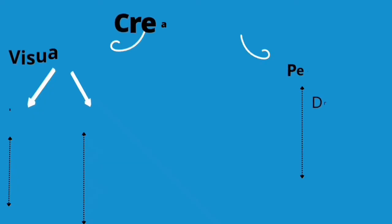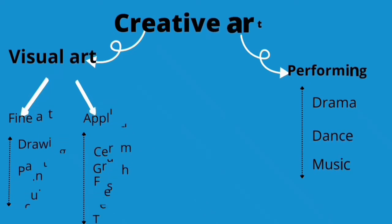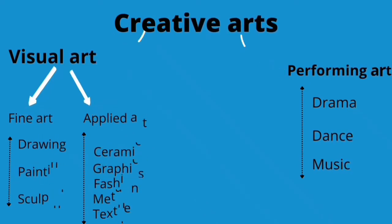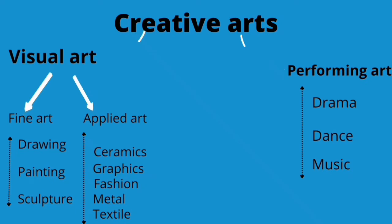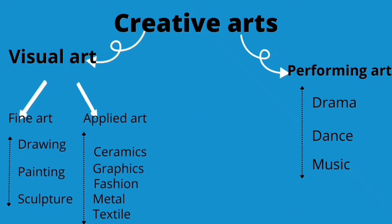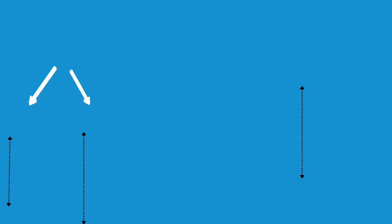Here is the diagram and summary of the classification of arts. Creative art is divided into two broad divisions: visual art and performing arts. Visual art is further divided into fine art and applied arts. Fine art is divided into drawing, painting, and sculpture. Applied art is divided into ceramics, graphics, fashion, metal, and textile.